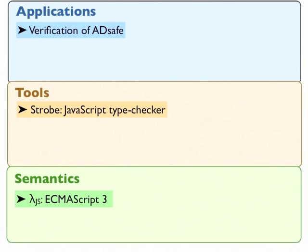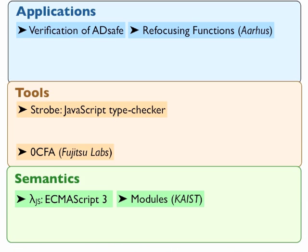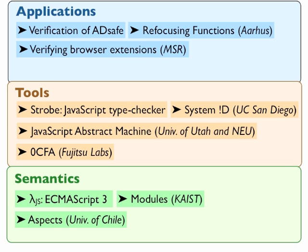But one thing that we're really excited about is that at all levels of this stack, other researchers have managed to build on what we've done. We've seen people extending the semantics of LambdaJS. We've seen people building on top of our semantics, creating new tools. And we've seen people taking existing tools and going out to tackle new applications. So this is really great.